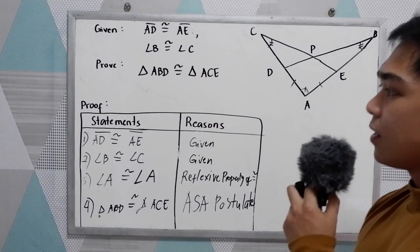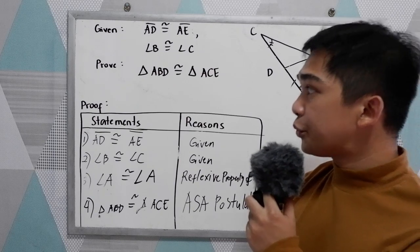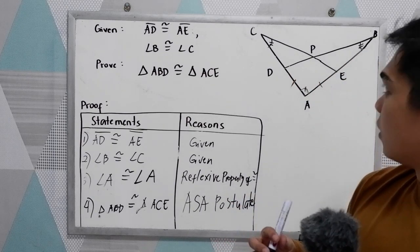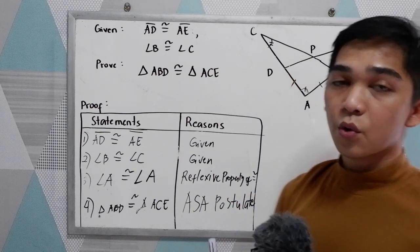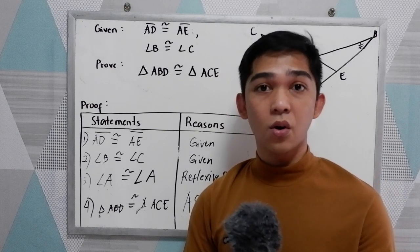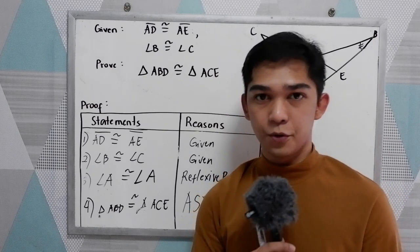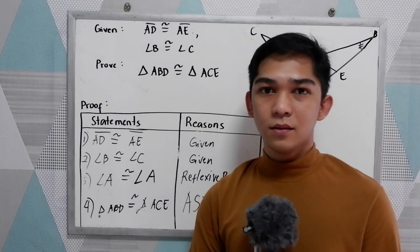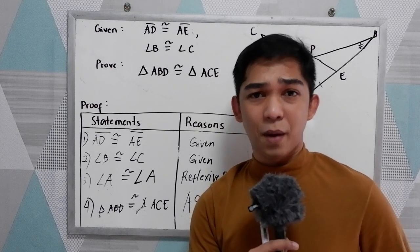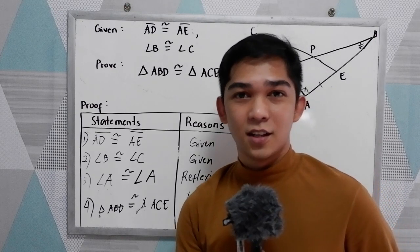That is how to prove triangle congruence using the two-column proof. Thank you for watching Sr. Pablo TV.